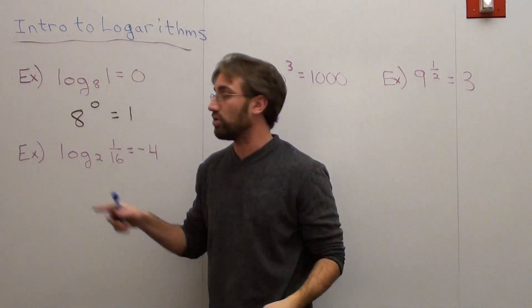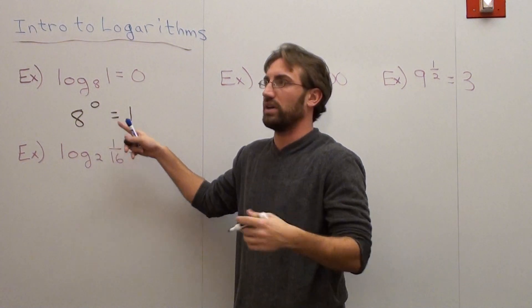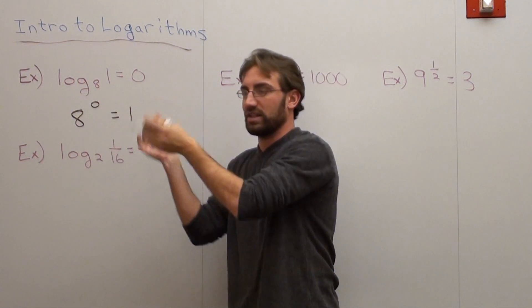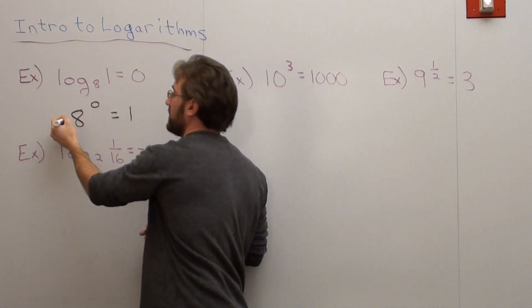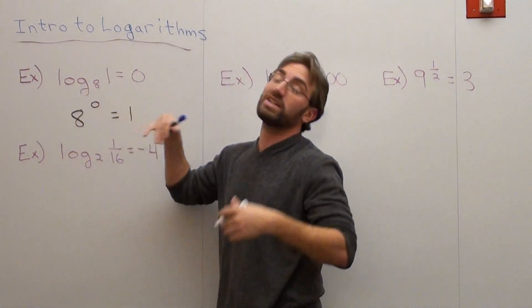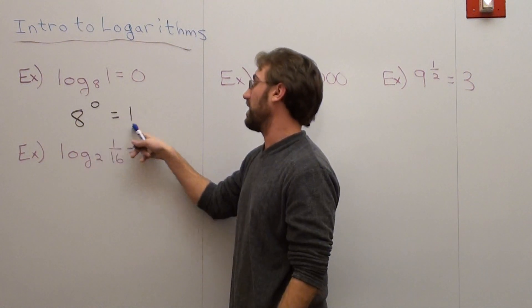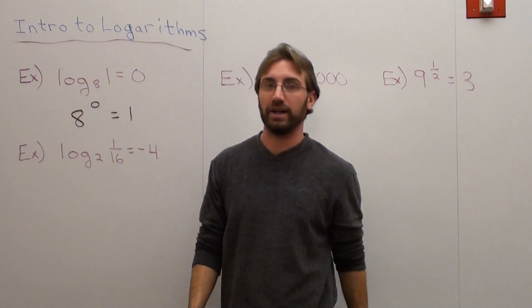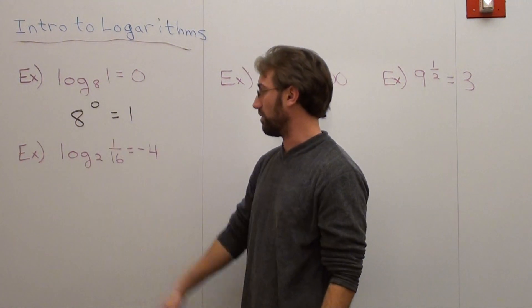And in fact, that is true, because anything to the 0 is 1, as long as there's not a negative that doesn't have a parentheses in front of it. Like if it's negative 8 to the 0, that would be negative 1, but we're not working with that. And besides, your base can't be negative anyways. So 8 to the 0 is 1. That's how you write it in exponential form.